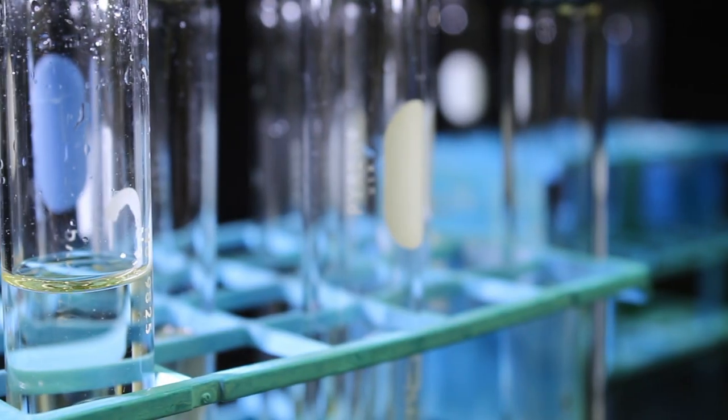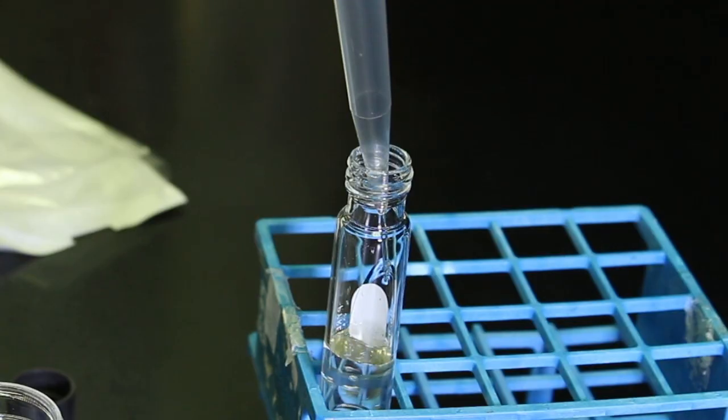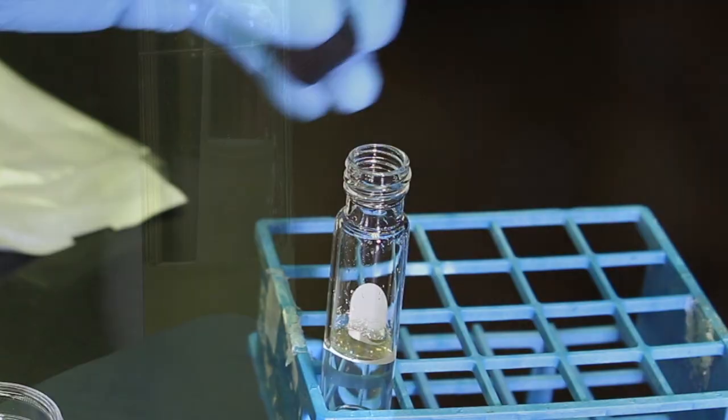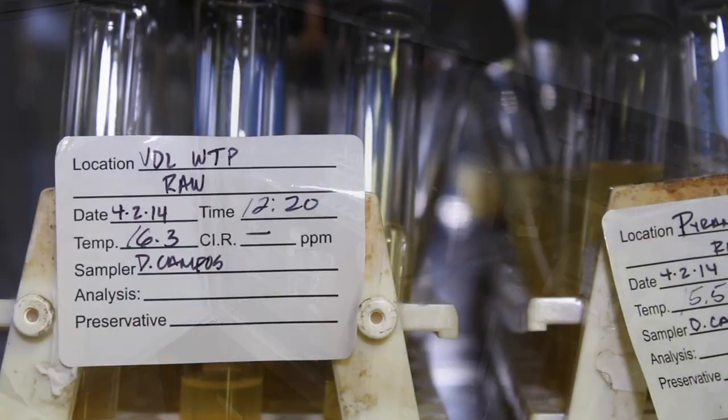Often, this test is performed on multiple tubes, instead of the single ones shown here, and sometimes with smaller sample sizes than the 10 milliliters. Once the sample is in place, the test tube is swirled to mix the contents and then it is placed in an incubator.